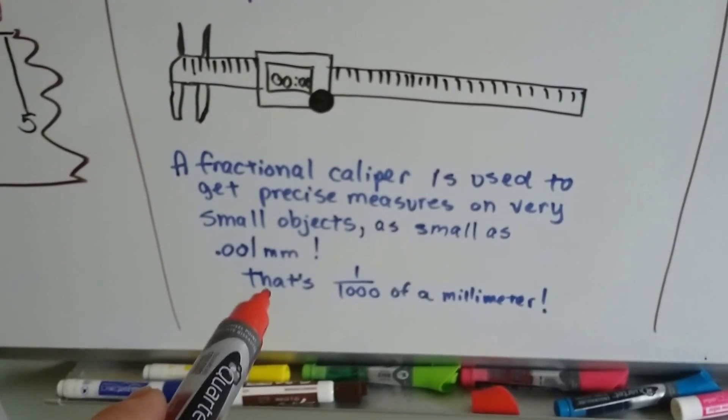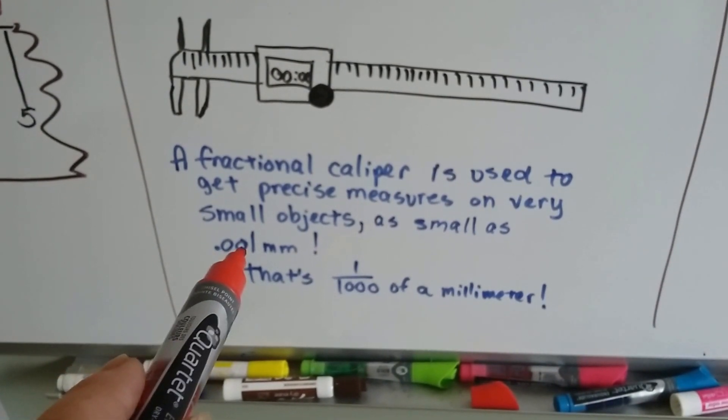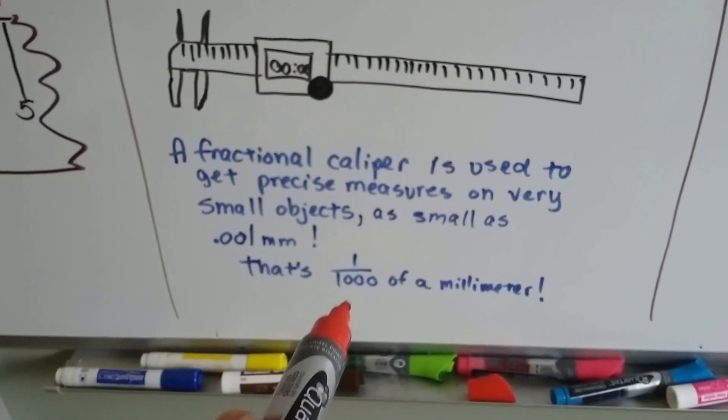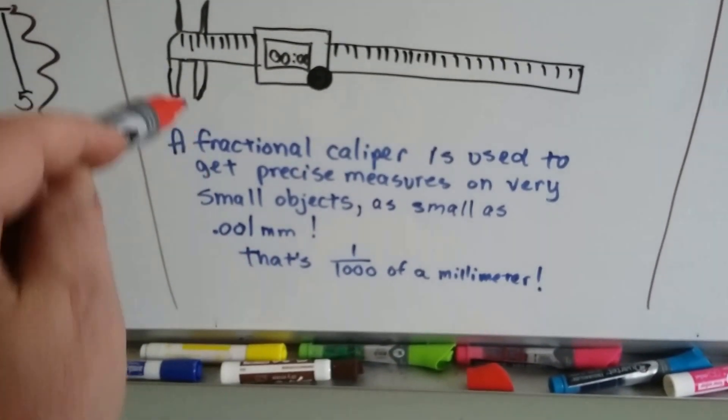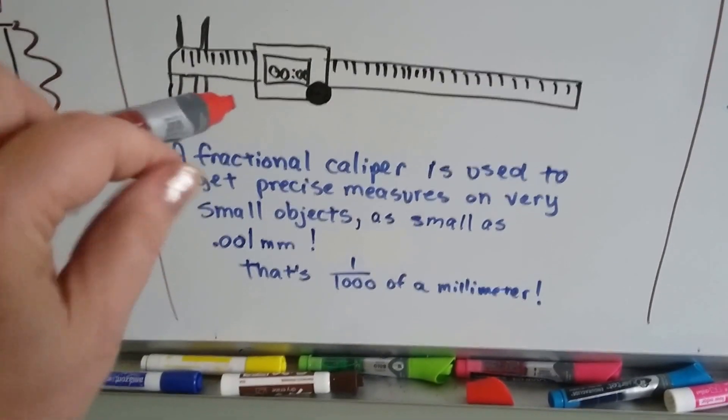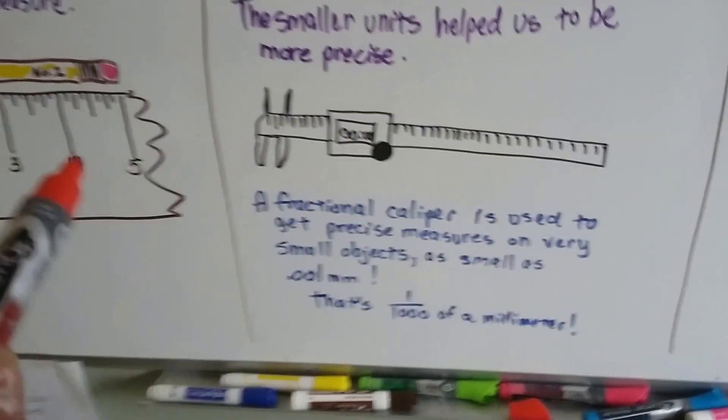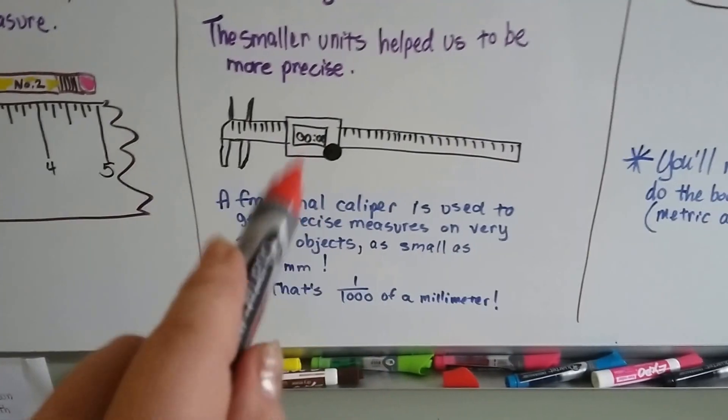It could be as accurate to one thousandth of a millimeter. It can measure a tiny thing. That's way more precise than a ruler, isn't it?